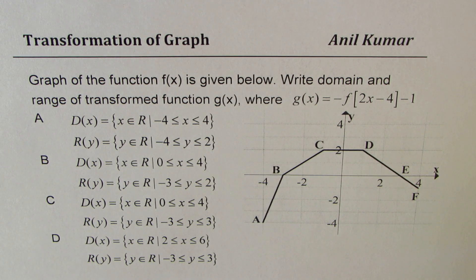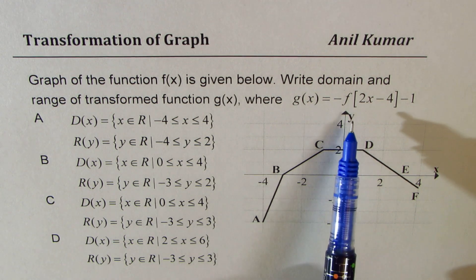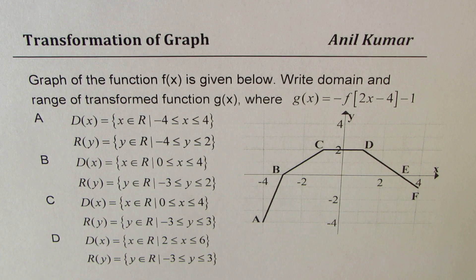Question is, graph of the function f of x is given below. So that's the graph of the function given. However, write domain and range of transformed function g of x, where g of x is equal to minus f of 2x minus 4 minus 1. Four choices are given to you. You can answer the question and then look into my solution.